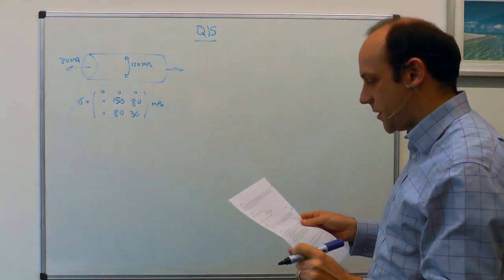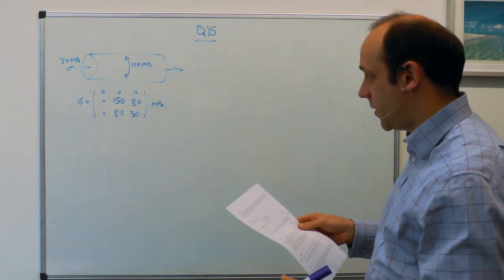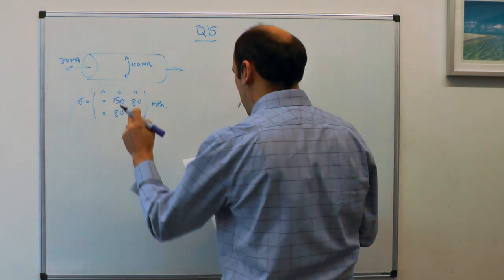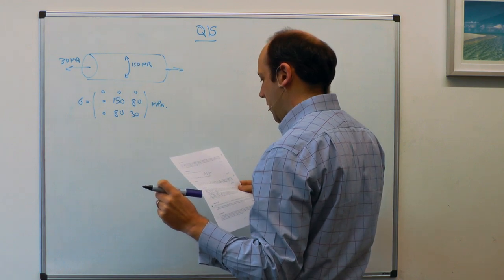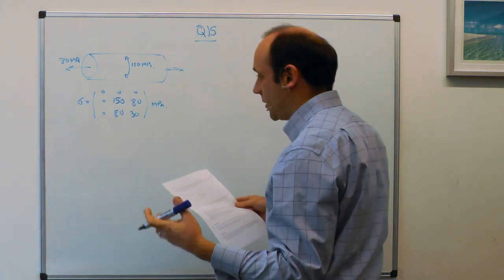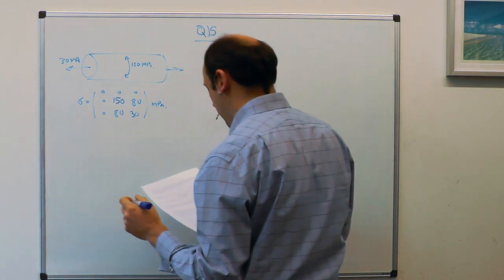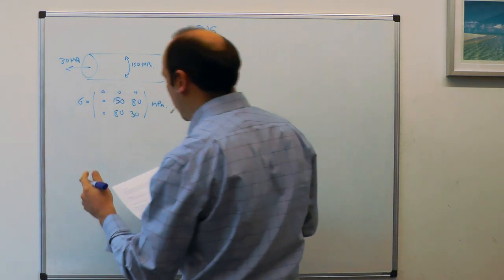So the question then asks, write down the stress matrix. We've done that. Find the principal stresses and maximum shear stress, what angle is the hoop stress to the maximum principal stress, and write down the hydrostatic stress. Well, the hydrostatic stress we can write down immediately. Let's do it at the end.